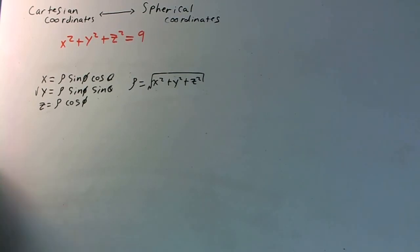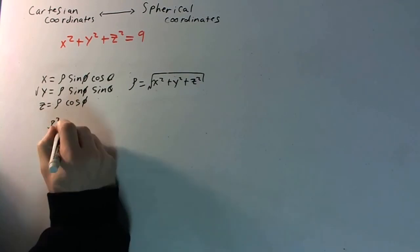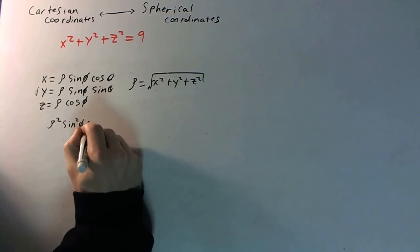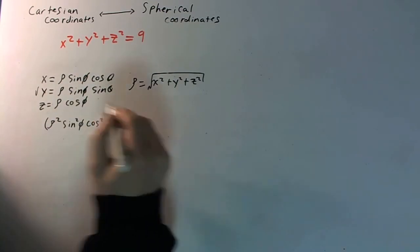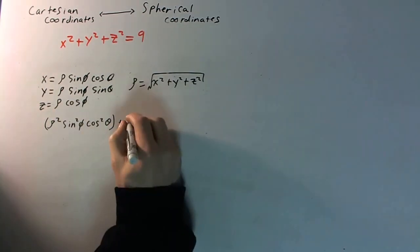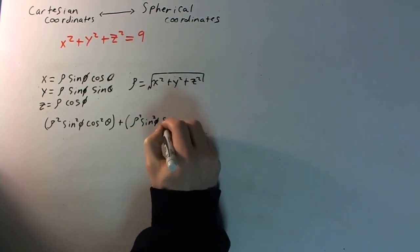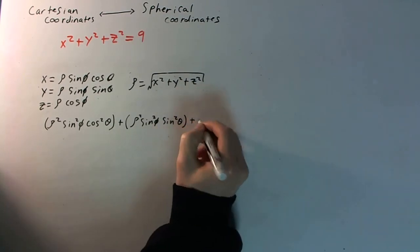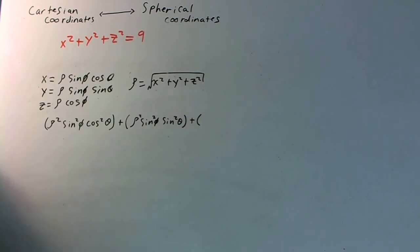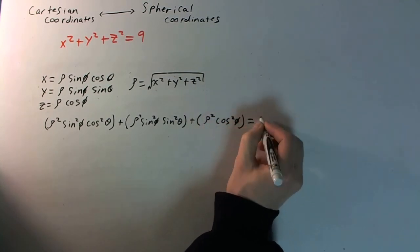So we know that x is rho sine of phi cosine theta. So let's plug that in. Obviously, if you square this, you're going to get rho squared sine squared phi cosine squared theta for the x term. Plus y squared — and y squared gives us rho squared sine squared phi sine squared theta. Plus the z term, which is just rho squared cosine squared phi, and this is going to be equal to 9.